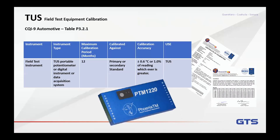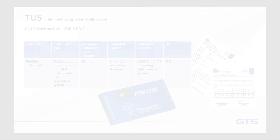The actual device you're using for your survey has strict calibration requirements under CQI-9. You need to calibrate the logger at a minimum of every 12 months — more frequently is obviously recommended as it gives you more confidence. The calibration accuracy for the device has to be plus or minus 0.6 degrees Celsius or 1% of the reading, whichever is the greater value.